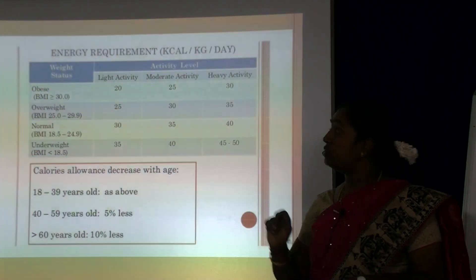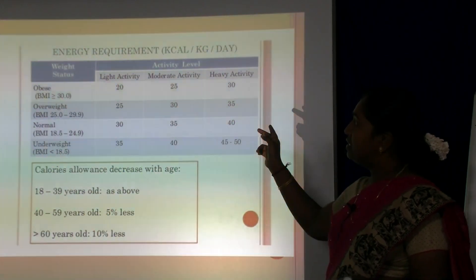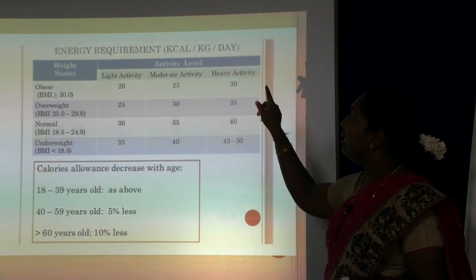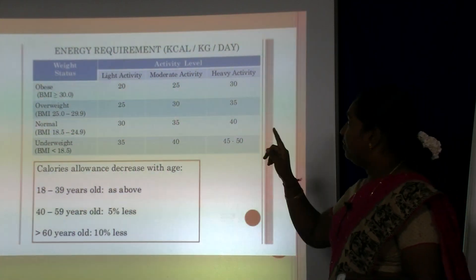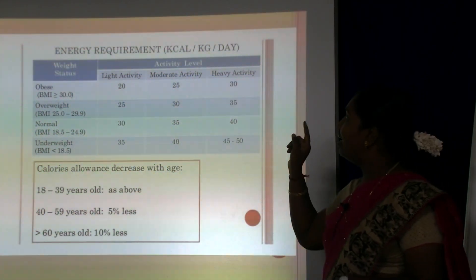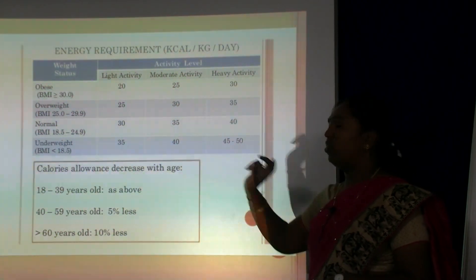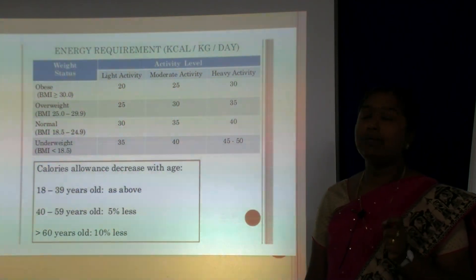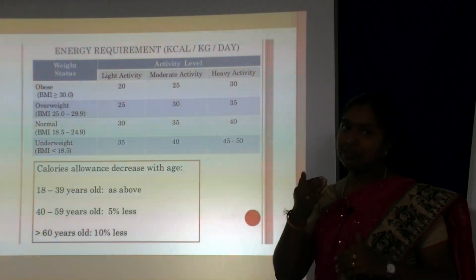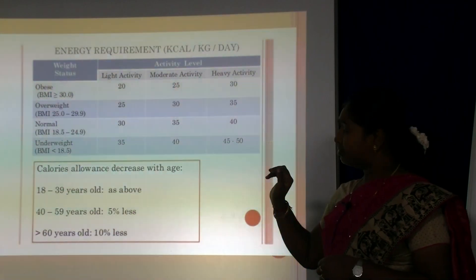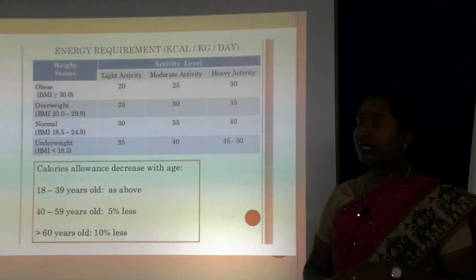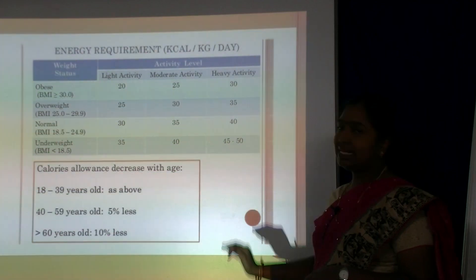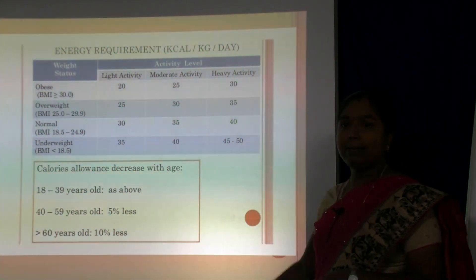The weight status categories are obese, overweight, normal and underweight, each with an activity level. An obese person doing light activity requires 20 kilocalories per kg of body weight; moderate activity requires 25 kcal/kg. For heavy activity, 45–50 kilocalories per day per kg of body weight are needed. Calorie requirements decrease with age: for ages 40–59, it should be 5% less than the standard; above 60 years it should be about 10% less.